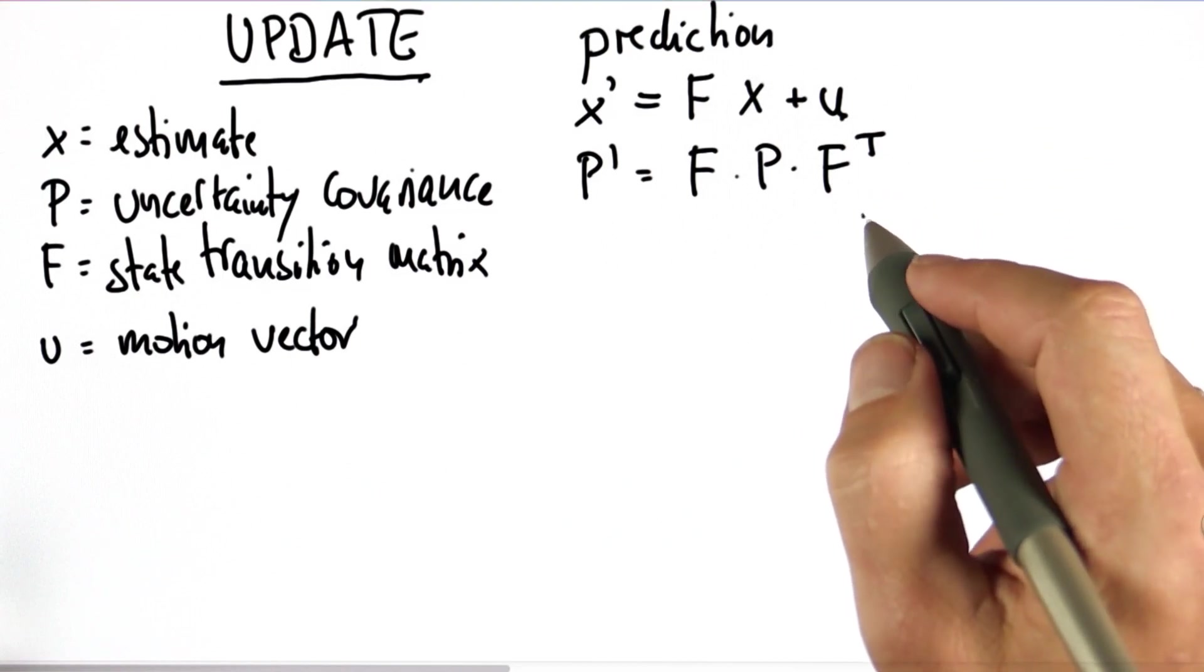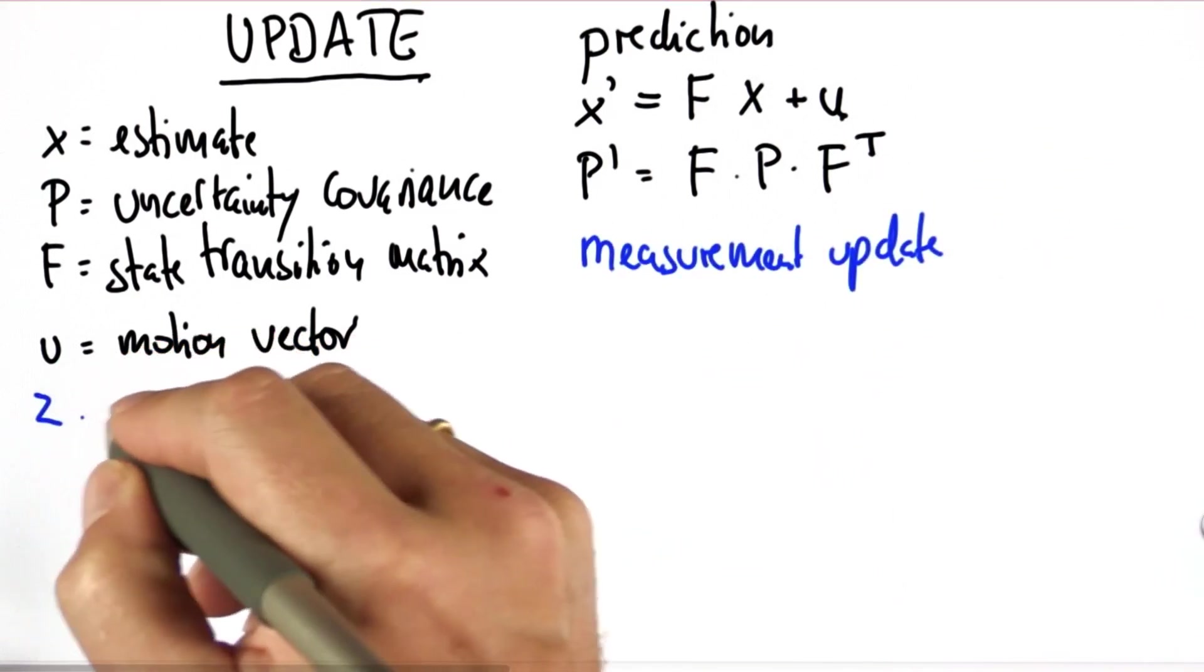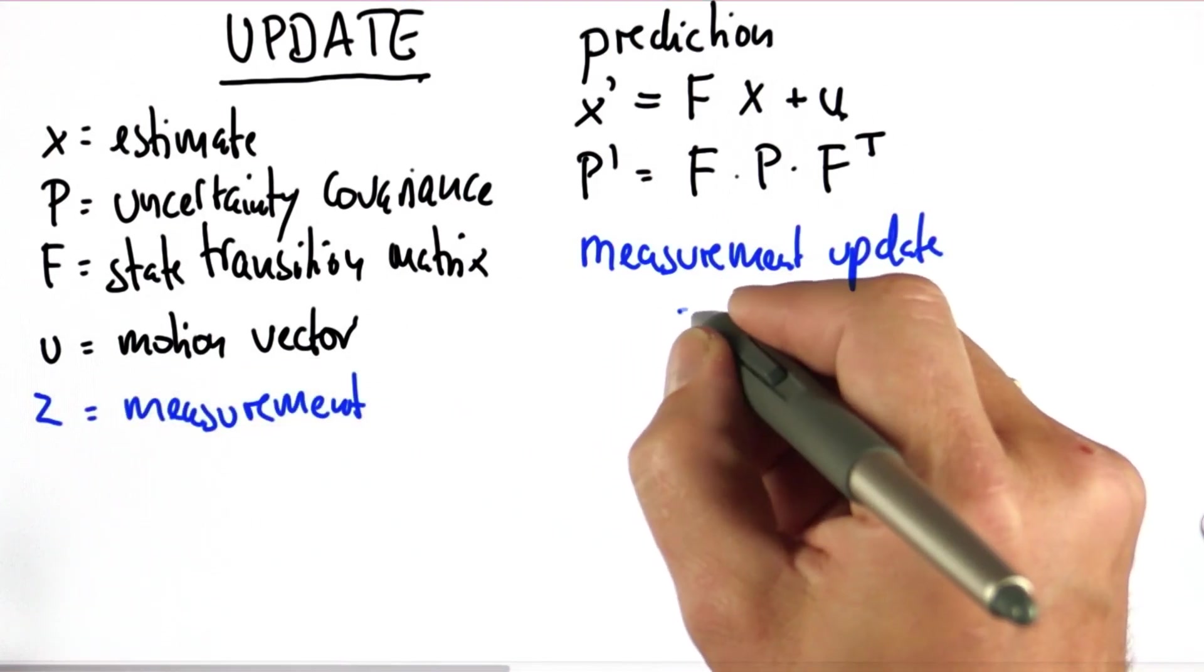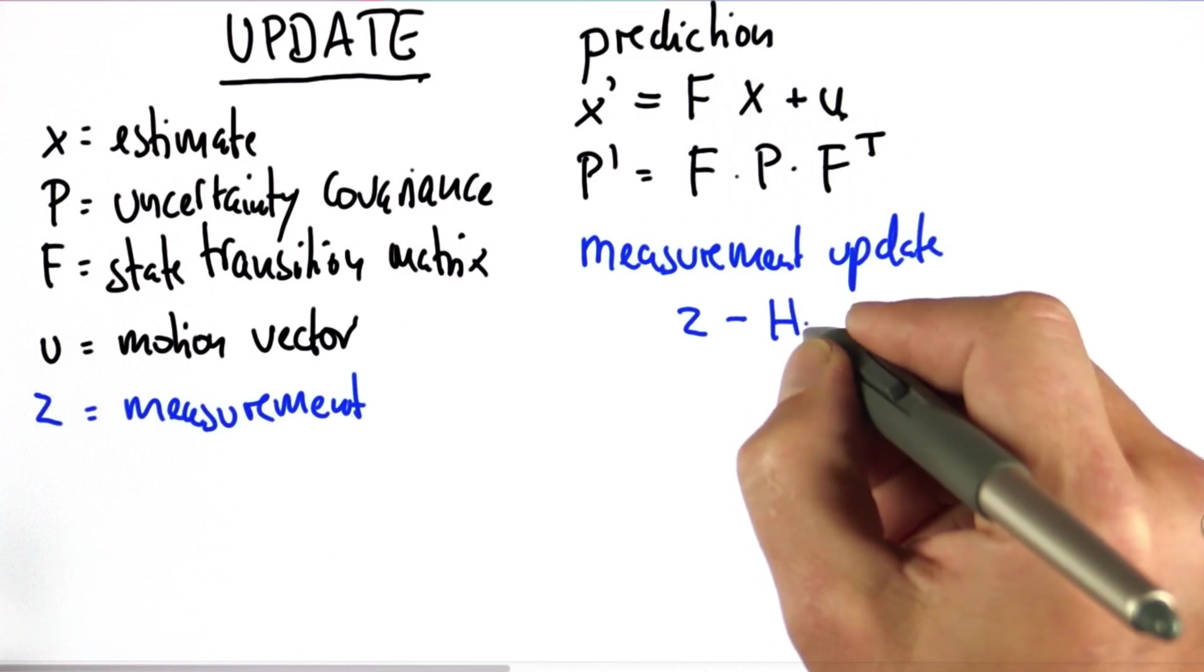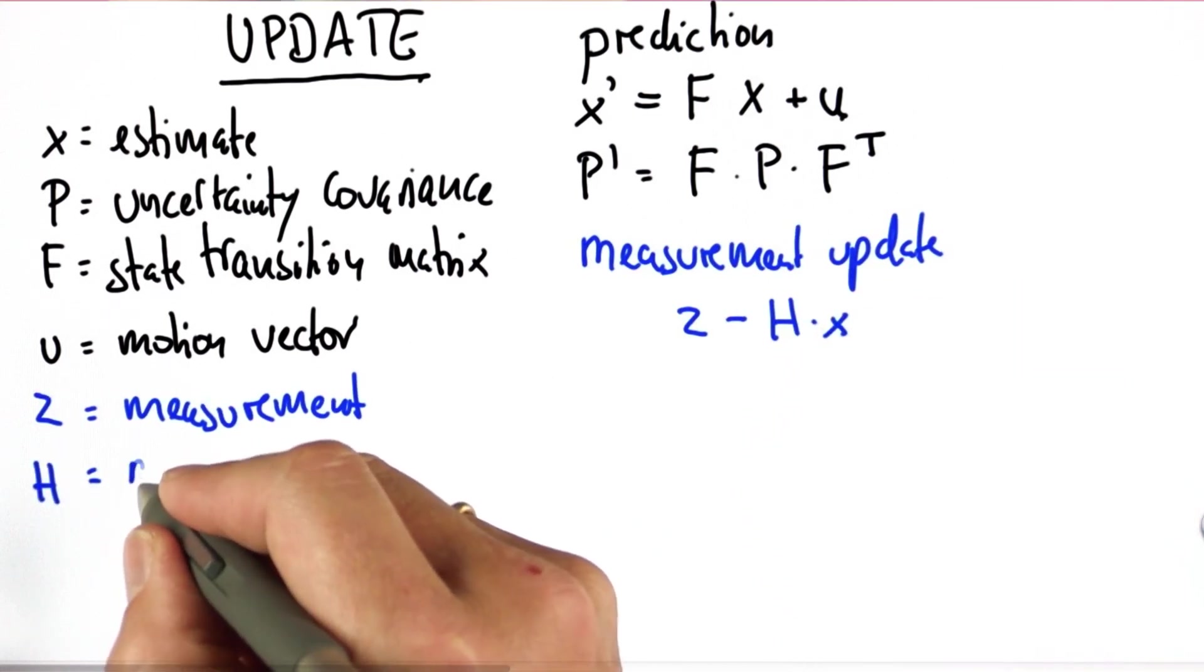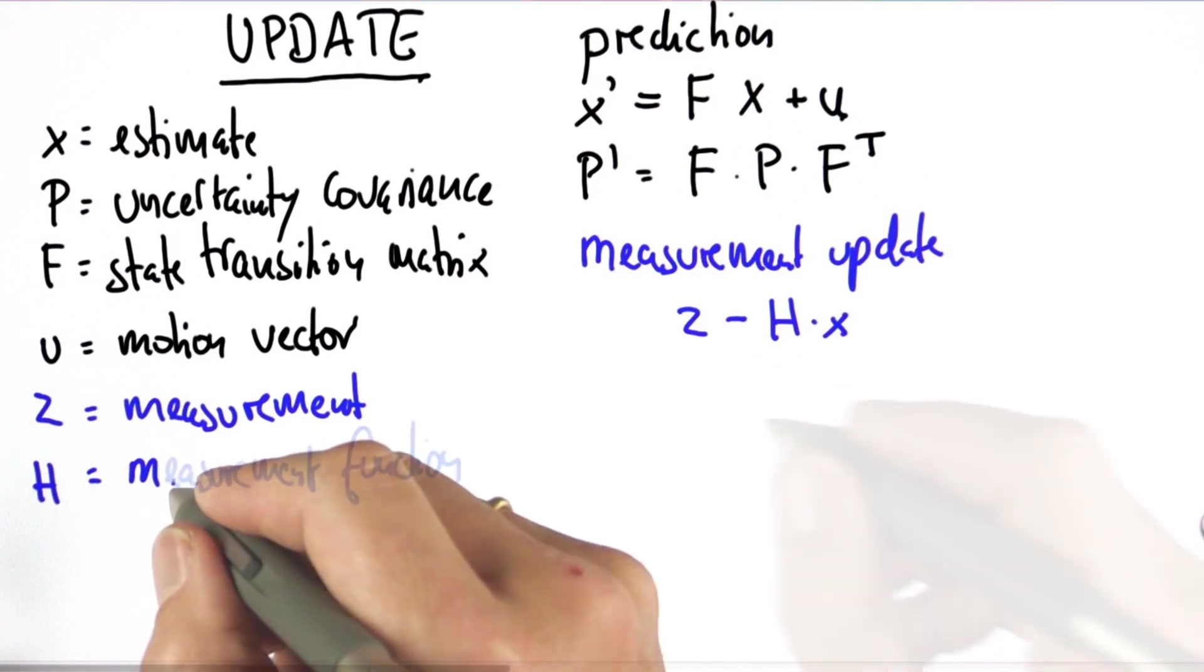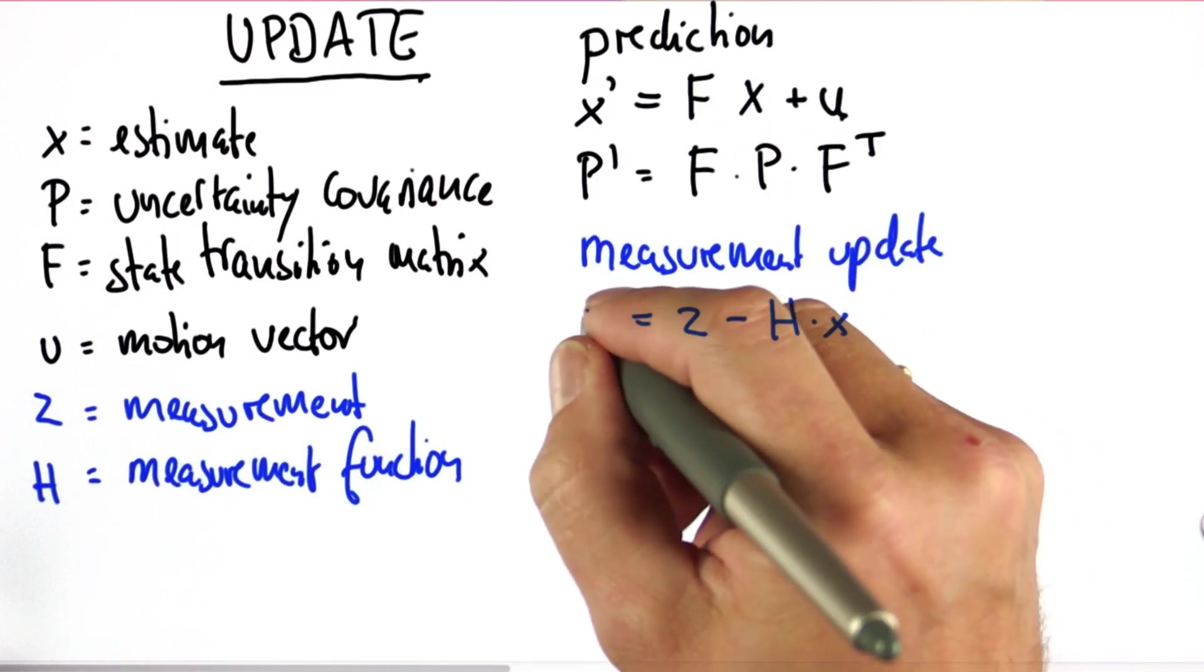There's also a measurement update step where we use the measurement z. We compare the measurement with our prediction where h is the measurement function that maps the state to measurements. We call this the error.